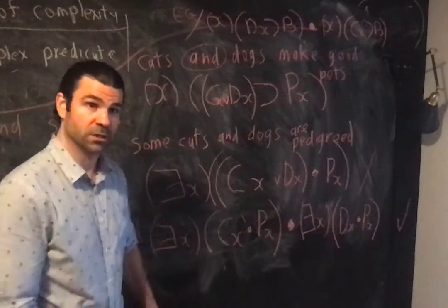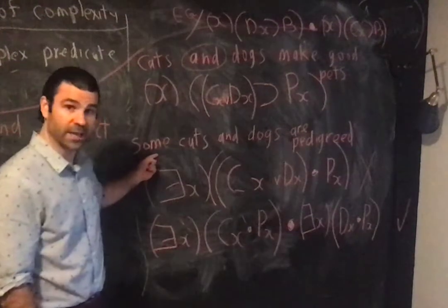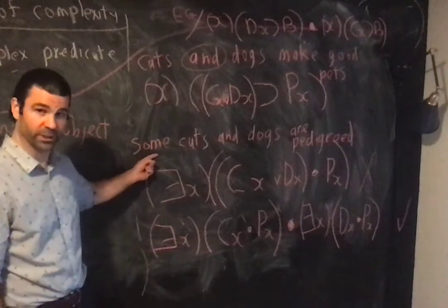Unit 13 part 6. So some cats and dogs are pedigreed.